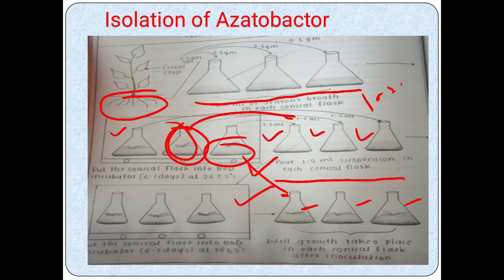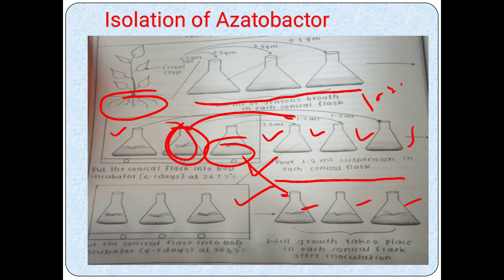After six to seven days, growth of Azotobacter takes place. For mass multiplication, take three to five conical flasks each containing 100 ml of Jensen broth, and transfer one to two ml of the Azotobacter suspension from the previous flask into each new conical flask. Place those in the BOD incubator for six to seven days, and again the growth of Azotobacter takes place on Jensen broth media.